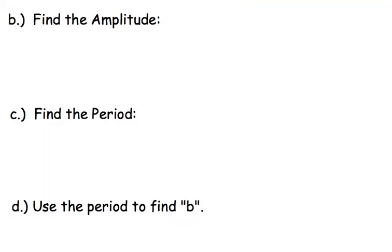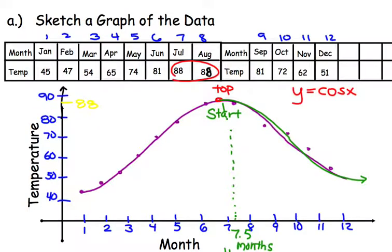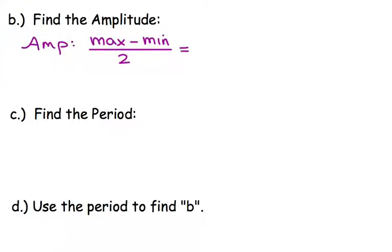So the first thing we want to do is find the amplitude. So if you remember from the first example, to find the amplitude, you want to find the maximum temperature, subtract it from the minimum temperature and divide it by 2. So maximum minus minimum and divide it by 2. So let's go find that. So what's our maximum temperature? 88. And what's our minimum temperature? 45, right? Let's go ahead and do that. 88 minus 45, and then divide that by 2. That'll give us our amplitude.